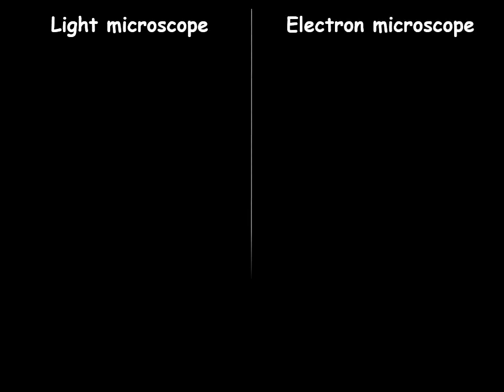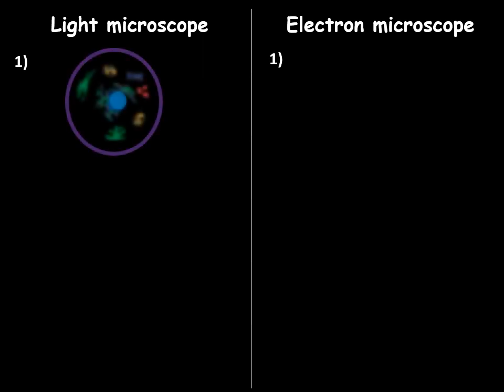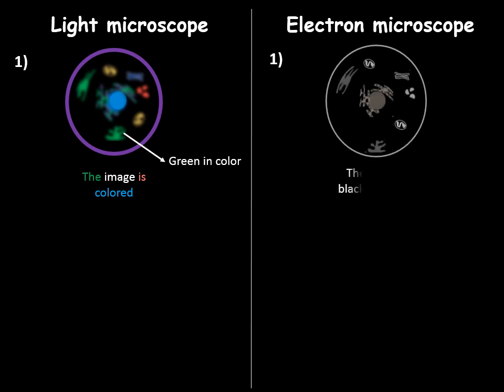Now that we understand what a magnification and a resolution is, let's understand the difference between the light and electron microscope. When you are viewing a specimen under a light microscope, the image as you can see appears to be colored. However, when the same specimen is viewed under an electron microscope, the image appears to be black and white. What do you think this is?